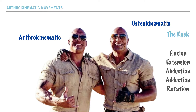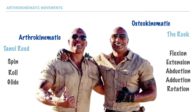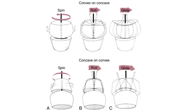But perhaps what we fail to recognize is that in order for these movements to take place, we need supporting movements. Consider The Rock's cousin, who is also his stunt double — he does a great deal of the behind-the-scenes grunt work, but The Rock gets all the credit. This is analogous to the relationship between osteokinematic and arthrokinematic movements, which include spin, roll, and glide. Without them, our osteokinematic movements would be severely impaired.